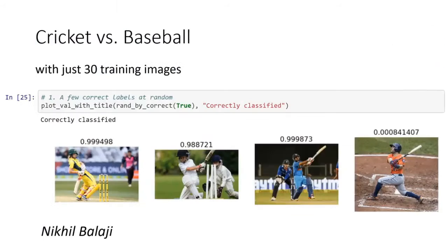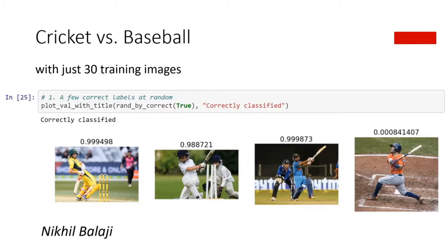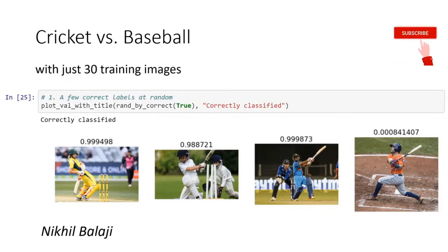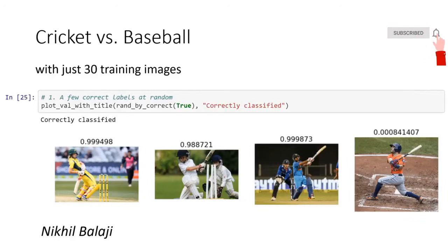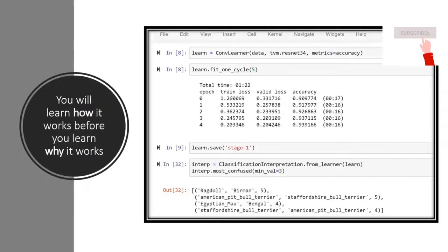What are you going to be able to do by the end of Lesson One? This was an example from Nick Hill, who's in the audience — he downloaded 30 images of people playing cricket and people playing baseball, ran the code you'll see today, and built a nearly perfect classifier distinguishing which is which. You can build this kind of thing with fun hobby examples, or try stuff in the workplace that could be of direct commercial value.